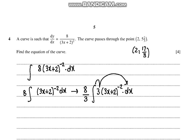Applying the power rule: 8 over 3 times (3x + 2)^(-2 + 1), which is (3x + 2)^(-1), divided by negative 1. So this would become negative 8 over 3 times (3x + 2)^(-1).